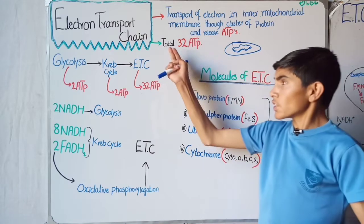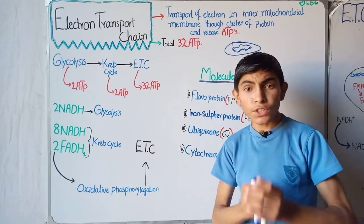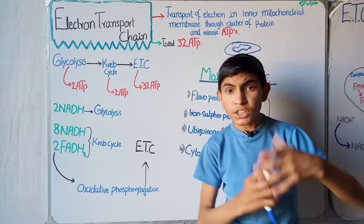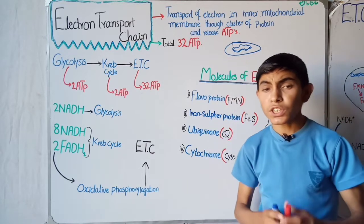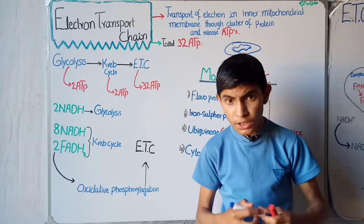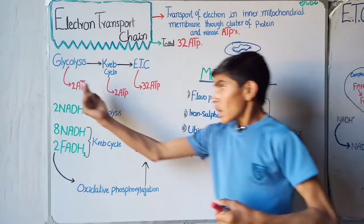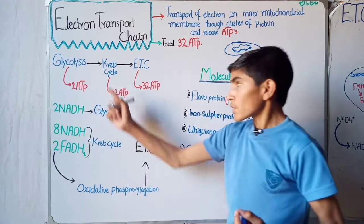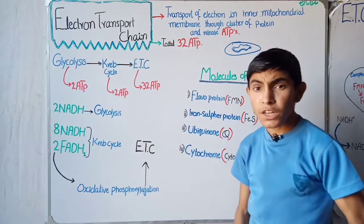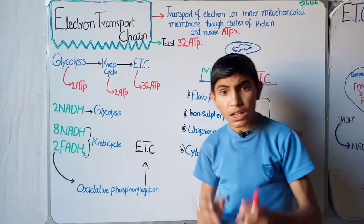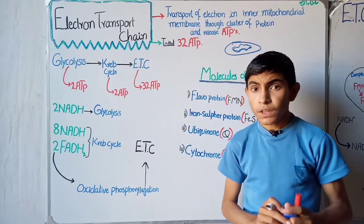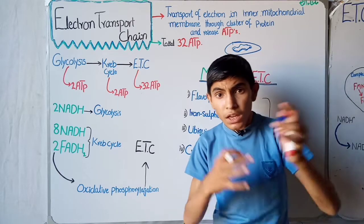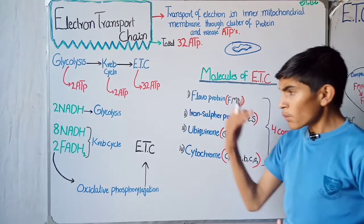During the electron transport chain, 32 ATP is released as a source of energy. In aerobic respiration a total of 36 ATP is released. As we mentioned in the previous lecture, during glycolysis 2 ATP is released, during the Krebs cycle 2 ATP is released, and the remaining 32 ATP is released during the electron transport chain, making it the main site of energy release in aerobic respiration.